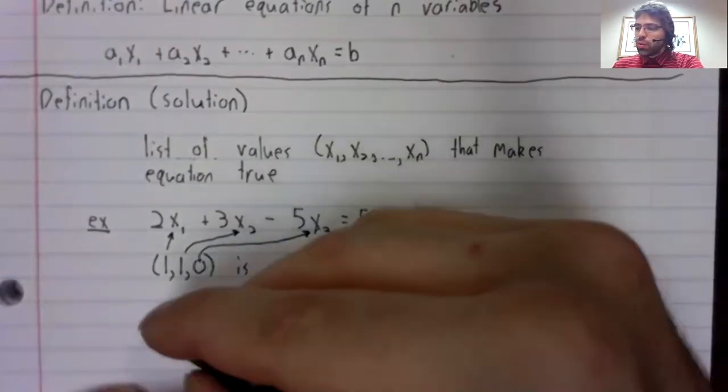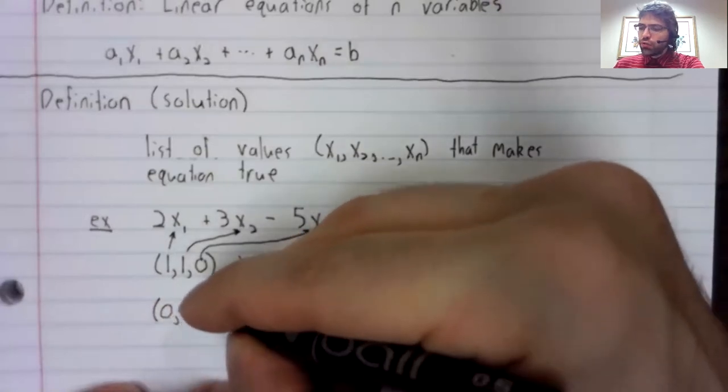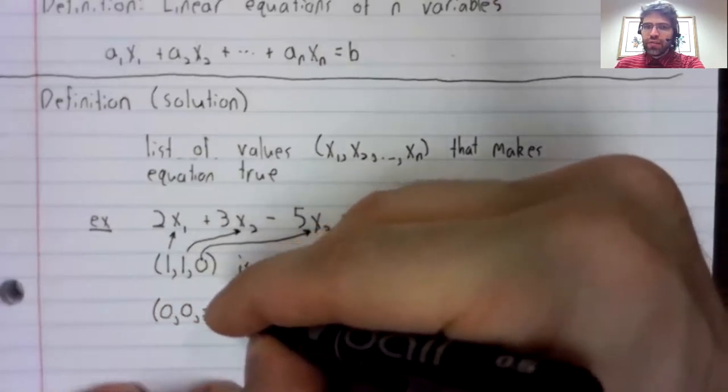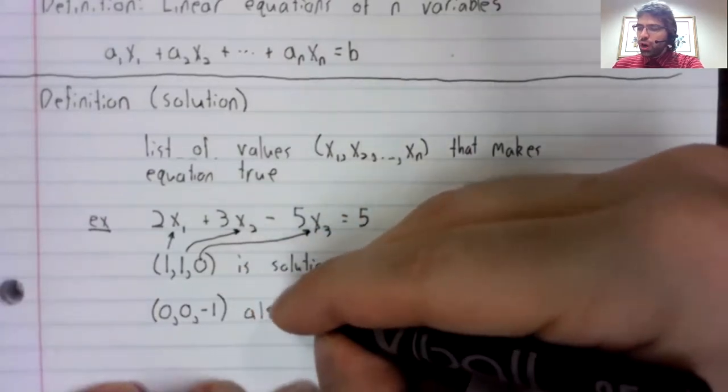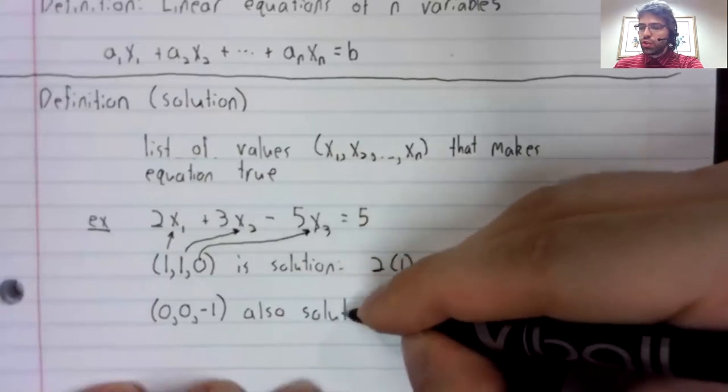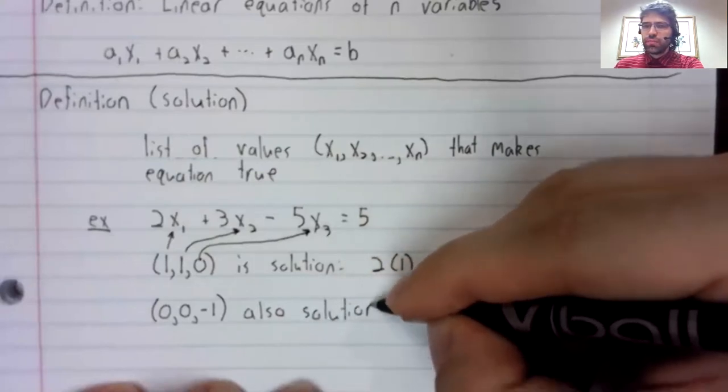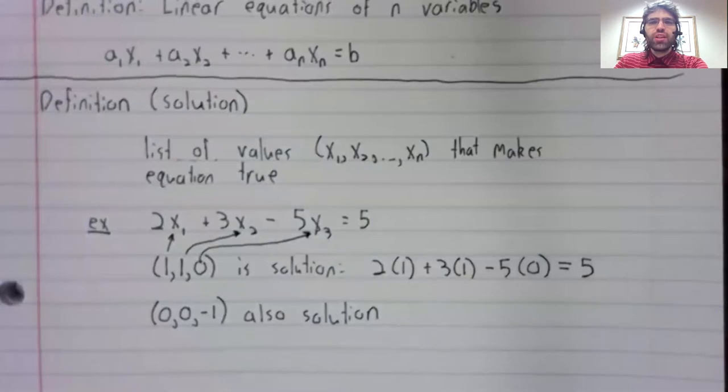Now, the triple zero, zero, negative one is also a solution. And from this example, we see that linear equations have multiple solutions.